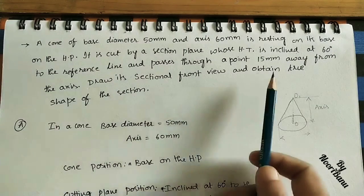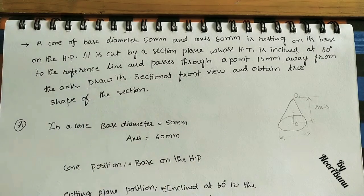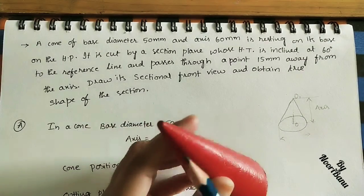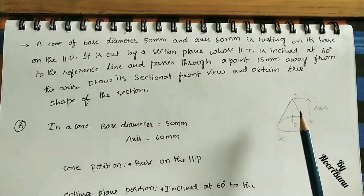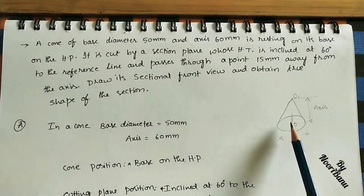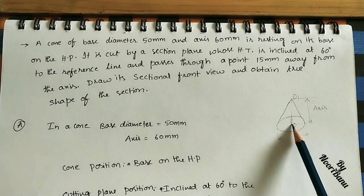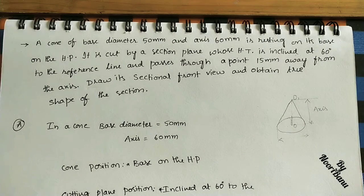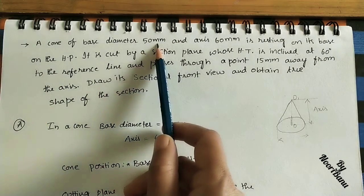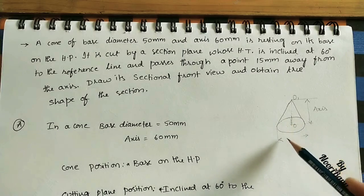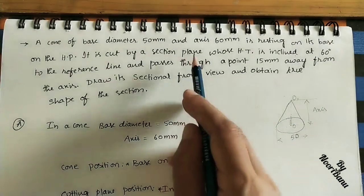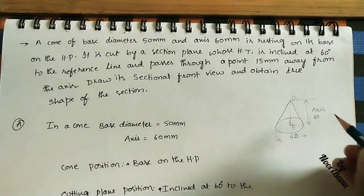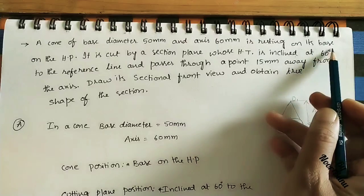The given solid is a cone. The base is a circle and there is an apex. The distance from the center of the circle to the apex is known as the axis or height of the solid. The given cone has a base diameter of 50 mm and an axis of 60 mm.